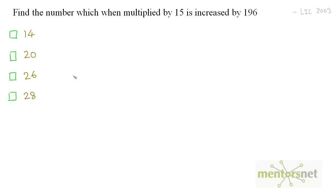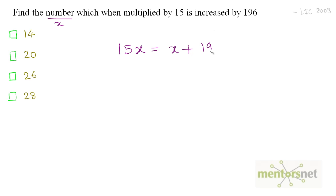Let us get to the next question. Find the number which, when multiplied by 15, is increased by 196. We will consider this number as x. So 15x equals x increased by 196, which is x plus 196.